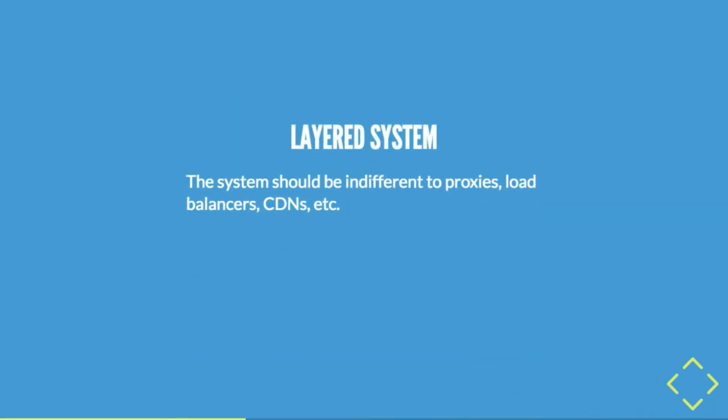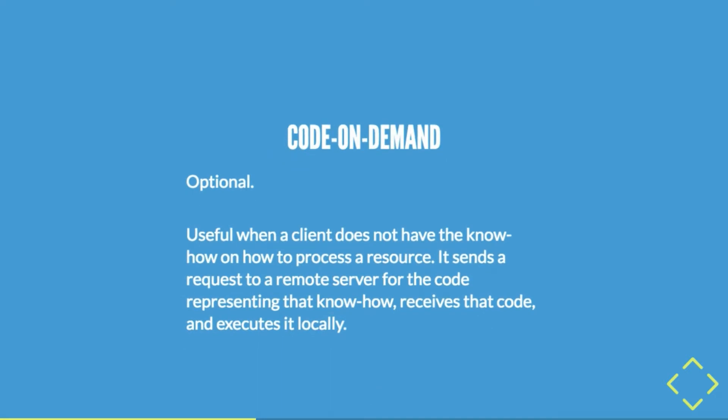That's related to another principle: a layered system. The idea is that if you're going to build a backend, you should be able to add layers in between and it should still continue to function as expected. Practically, that means if you're developing locally with React and a local Drupal instance, when you move to production with a CDN in front or Varnish, it should still operate the same way. You can insert those intermediate layers to improve performance and everything should operate the same.